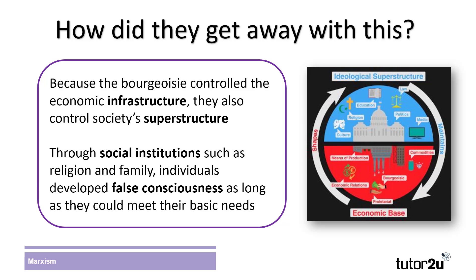Despite providing the labor that resulted in the profits of the ruling class, the proletariat were taught that they were fortunate to be able to meet their basic needs. The control of social institutions was essential in justifying this inequality in society, as Marx argued that when the proletariat became aware of this exploitation, they would revolt and seize the means of production for themselves. However, the ideological control of the infrastructure made it harder for individuals to realize the extent of their exploitation.